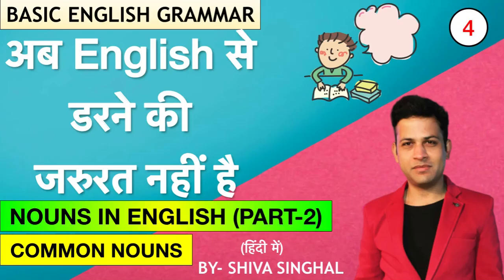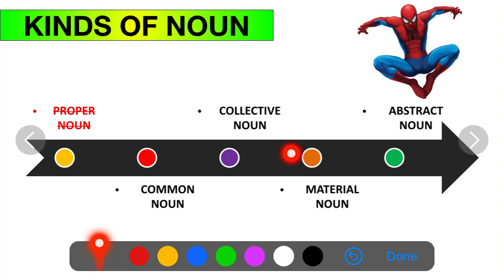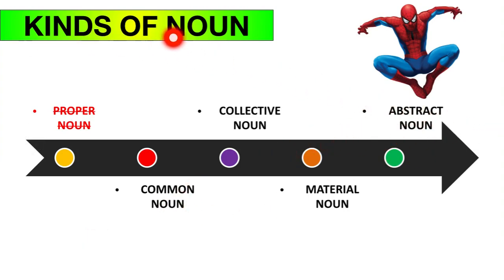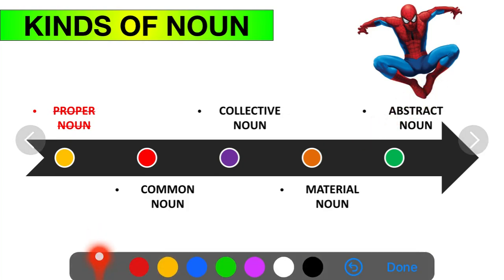Let's start and learn about common nouns. As you can see on screen, I told you about the kinds of nouns. We have already done some of them. Today we will talk about common nouns, then we will cover collective nouns, material nouns, and abstract nouns — all with their rules, examples, and exercises, so you will understand everything in detail.